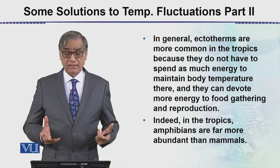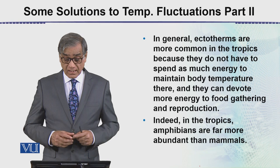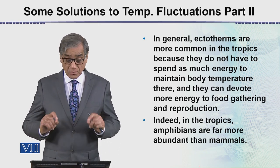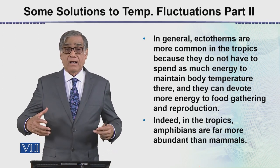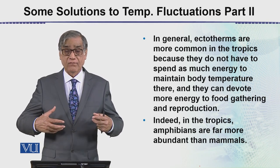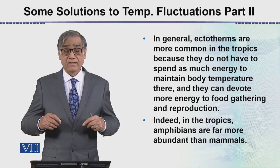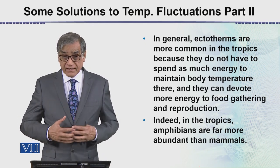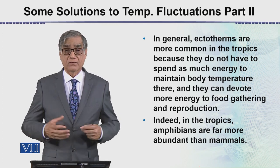In general, ectotherms are more common in the tropics. In fact, in the tropics, amphibians are far more abundant than mammals, because their energy is mostly used for food gain rather than heat loss. As a result, amphibians are very active and have very large populations in tropical regions.